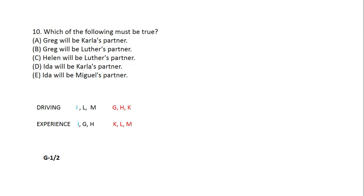Which of the following must be true? Option A says G will be a color's partner, meaning G, R, K are on the same team. The job experience requirement must be met. G, R, K — we check if this team has a driver-trained member. The driving program members are I, L, M, so G, R, K would not satisfy the driving requirement. This option does not necessarily hold.